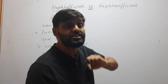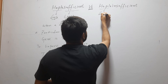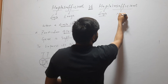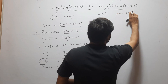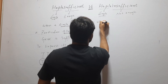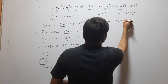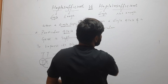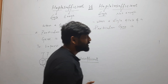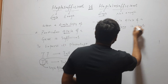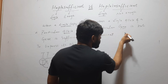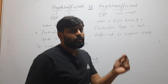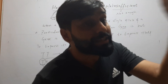In case of haploinsufficient, similarly haplo means single. Insufficient means not enough. So when a single allele of a particular gene is not sufficient or enough to express itself, the requirement is of two alleles to express its phenotype.